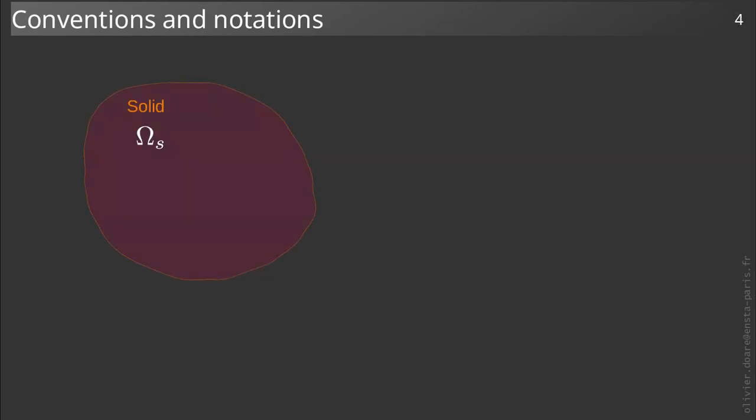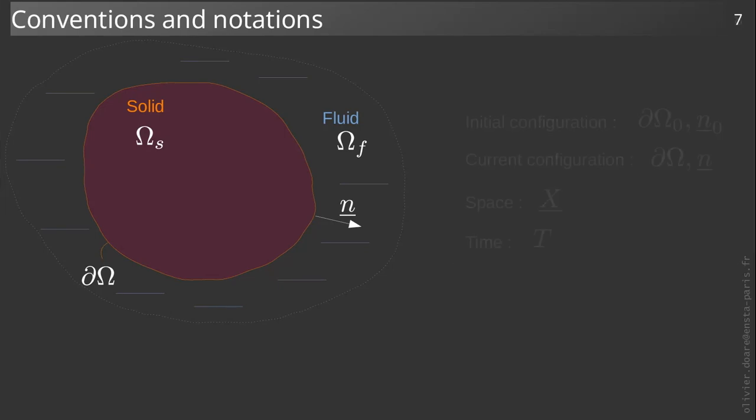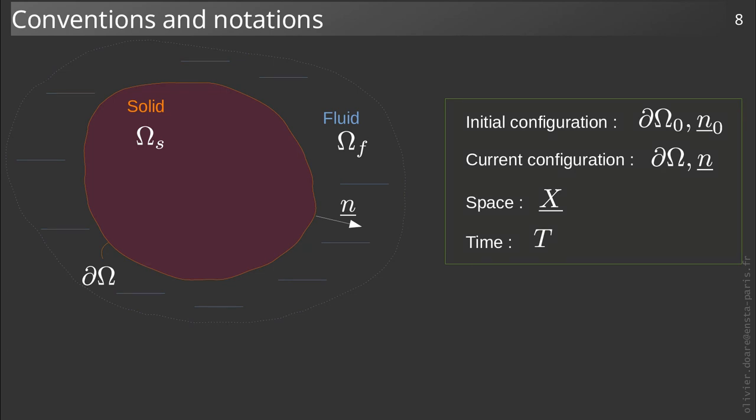We consider a solid defined by the domain ωs immersed in a fluid defined by the domain ωf. We note dω the boundary between the two domains. In the initial reference configuration, the quantities are indexed by zero. This index is removed when referring to the current configuration.